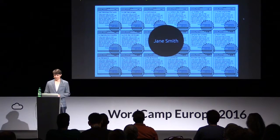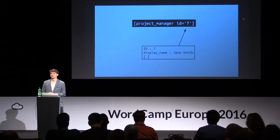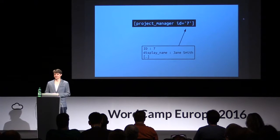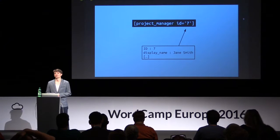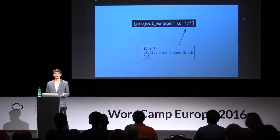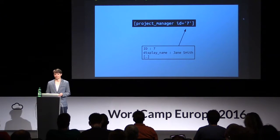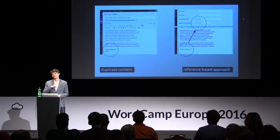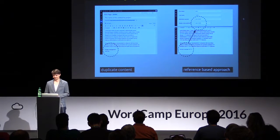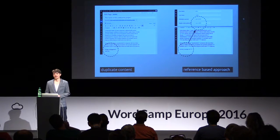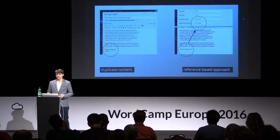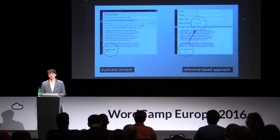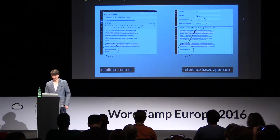So how can we do that with WordPress? For a very simple example, I'm just going to reuse WordPress users and create a very basic shortcode that does nothing else — when you give it the ID of a user, it outputs the name of the WordPress user it refers to. And if we now replace the names with those shortcodes, we're going from duplicate content spread all over our website to a reference-based approach. Now we only change the name once and it gets updated everywhere, which saves us a lot of time and improves the maintainability of our website enormously.